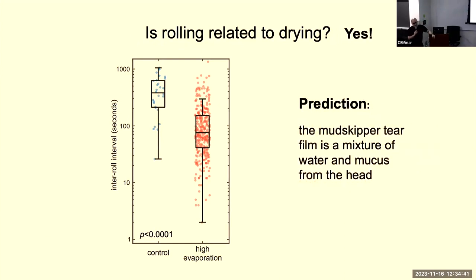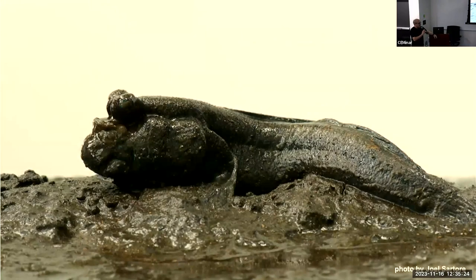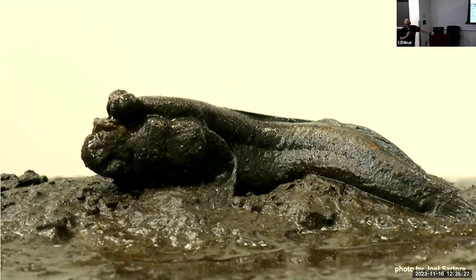We think the way these animals maintain a tear film is through a combination of typical fishy secretions — they're slimy — as well as recruitment of environmental moisture through this rolling behavior. This means they're pretty tied to aquatic environments; they can't go far off onto land because without environmental water to keep their eyes moist, they might suffer corneal scarring in the same way we do if we can't blink. The next thing we tested was whether this behavior is also related to cleaning — the second main hypothesis for the origin of blinking.